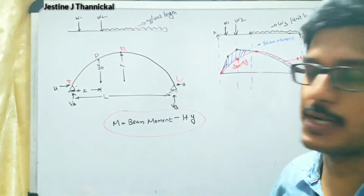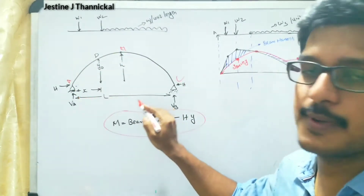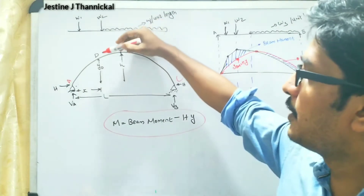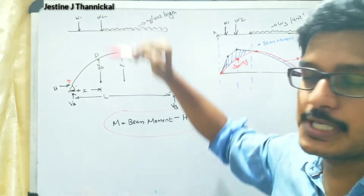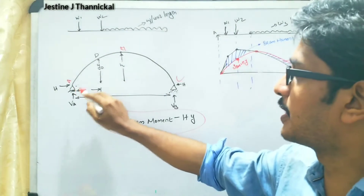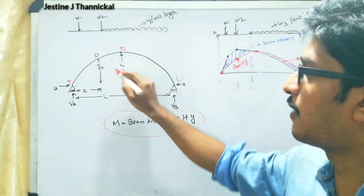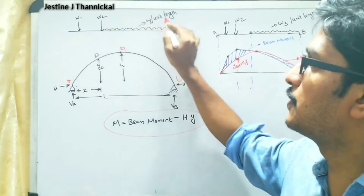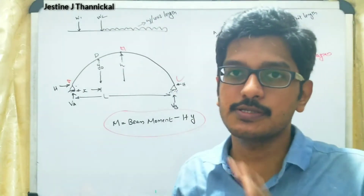Let A, B, C be the points. The total span is L, and if you want to find out the bending moment at a point D, at distance X from point A, with vertical distance Y_D, and loads W1, W2, and W3 acting over this arch.